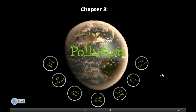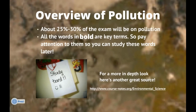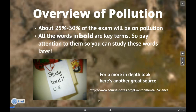Another installment for the AP Environmental Exam. This section will be talking about pollution. About 25 to 30% of the exam will be on pollution. All the words that I made bold or in red are going to be key terms, so pay attention because you definitely want to study these later. Take a look at this website because it's a great resource too.